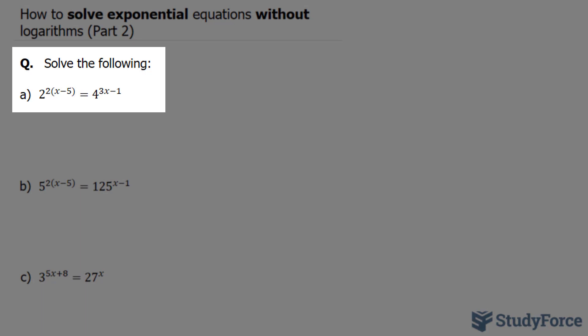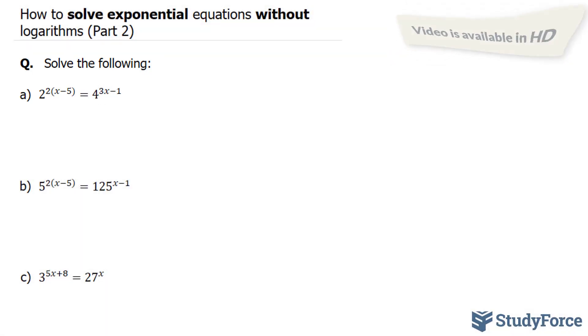The question reads, solve the following. We'll start with a. In question a, we have on the left side, 2 to the power of 2 times x minus 5. And on the right side, we have 4 to the power of 3x minus 1. To do this, we need to make this base and this base the same.